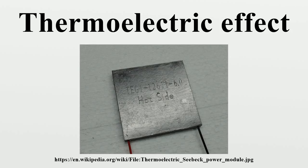Seebeck, in 1821, discovered that a compass needle would be deflected by a closed loop formed by two different metals joined in two places, with a temperature difference between the junctions. This was because the electron energy levels in each metal shifted differently and a voltage difference between the junctions created an electrical current and therefore a magnetic field around the wires.